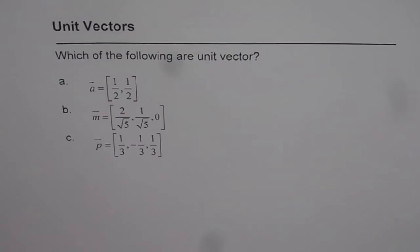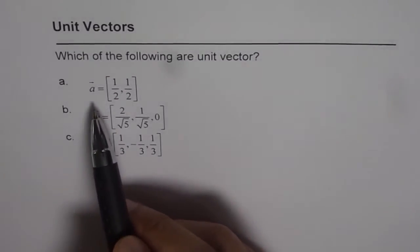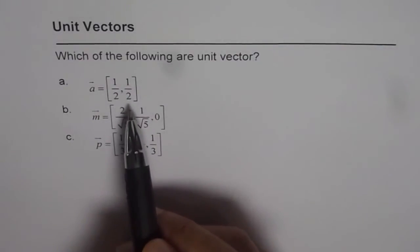I will do one of them for you. Others you do on your own. So I will do the first one which is A equals to half comma half.